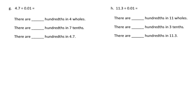It says 4 and 7-tenths divided by one-hundredth. The first part is we're going to rewrite each expression as a division sentence with a fraction divisor. That would be 4 and 7-tenths divided by one-hundredth, which is 1 over 100. There are 400 hundredths in four wholes, so we'll put 400.